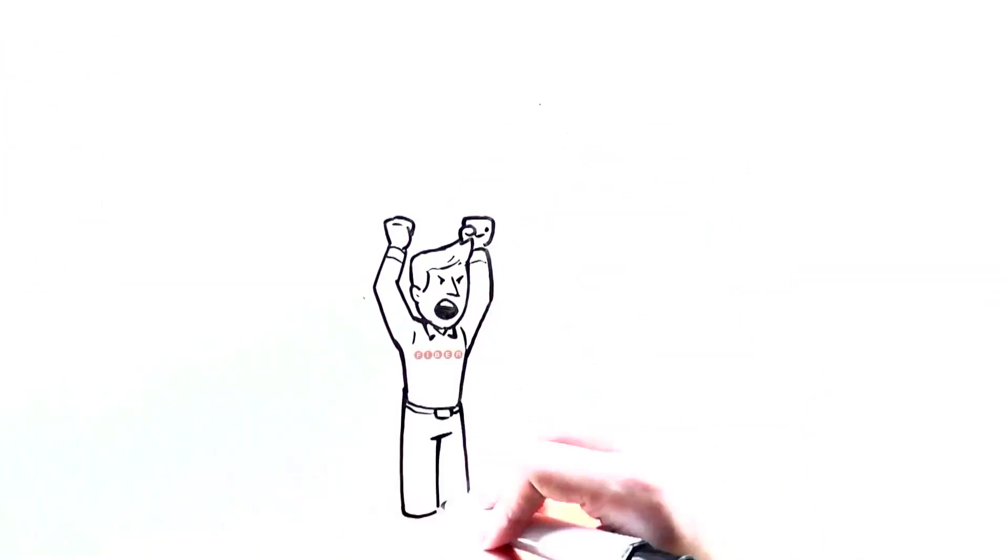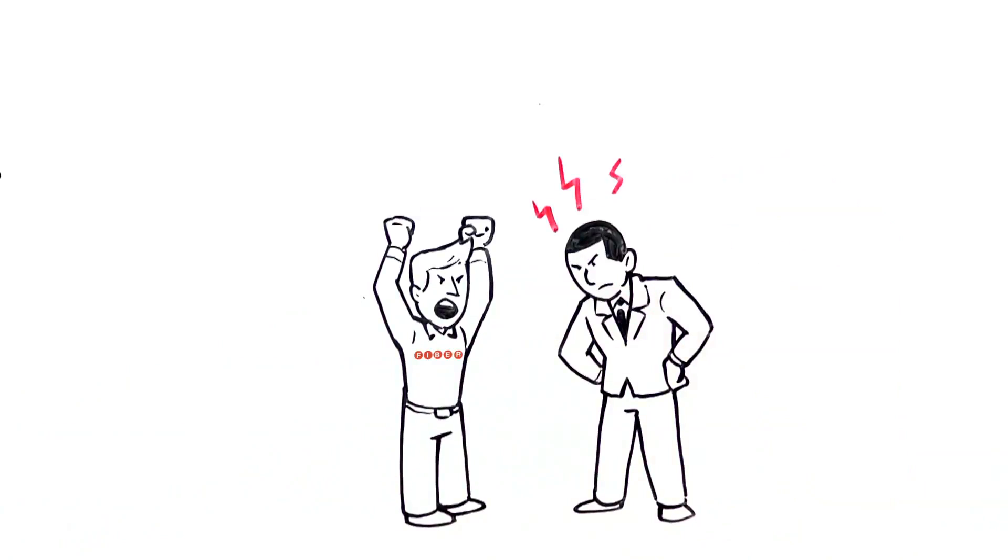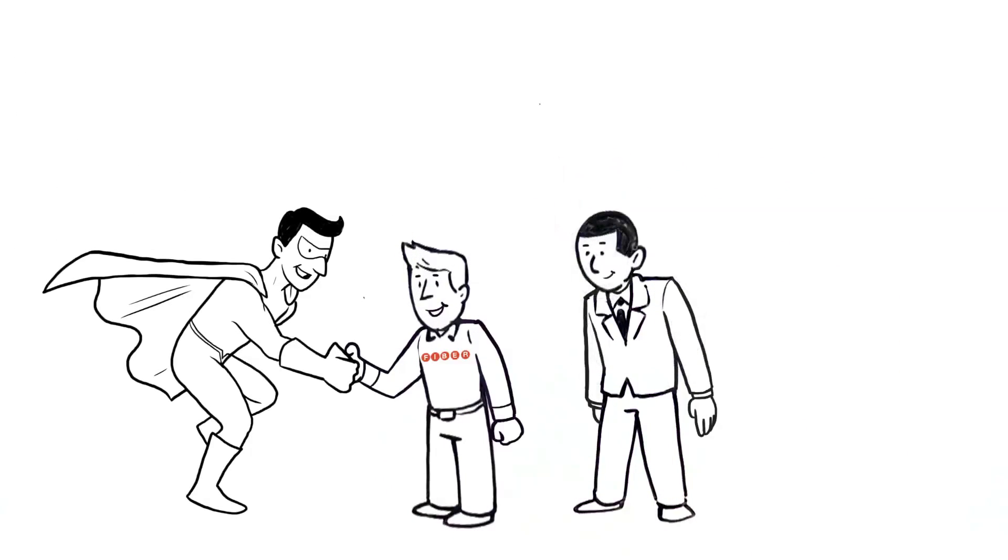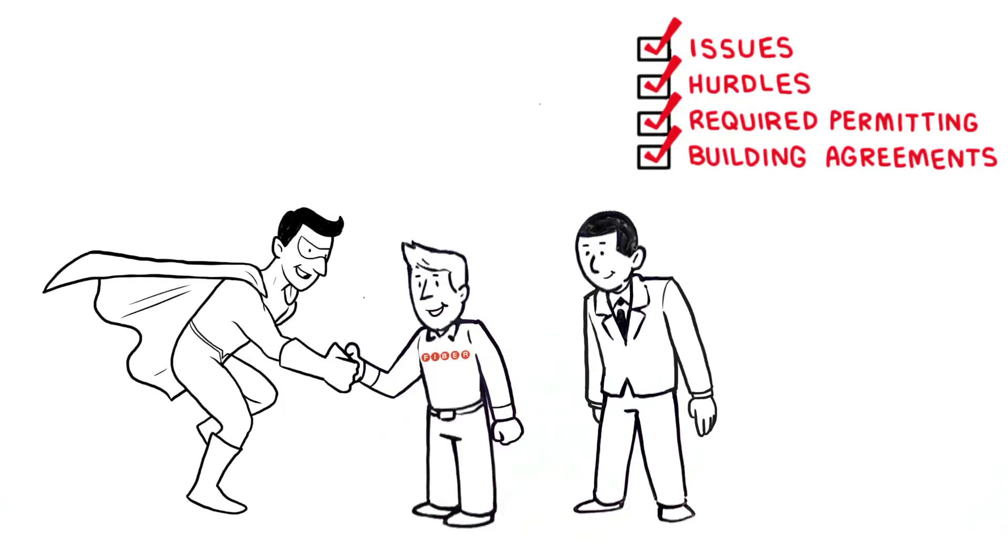Getting the municipality's approval isn't easy. Therefore, Vertex oversees that a positive relationship exists with each city, identifying issues, potential hurdles, plus permitting and building agreements.